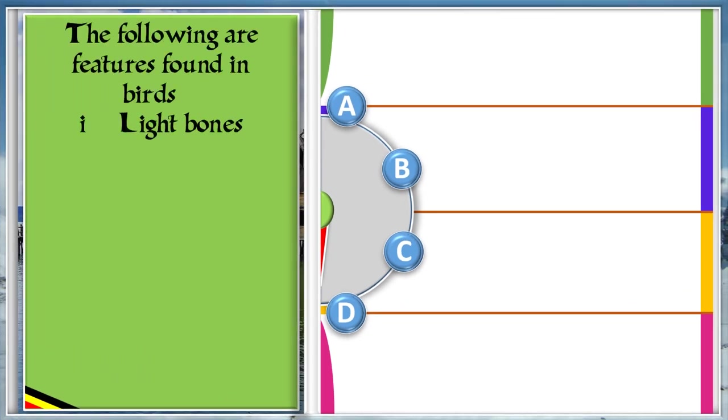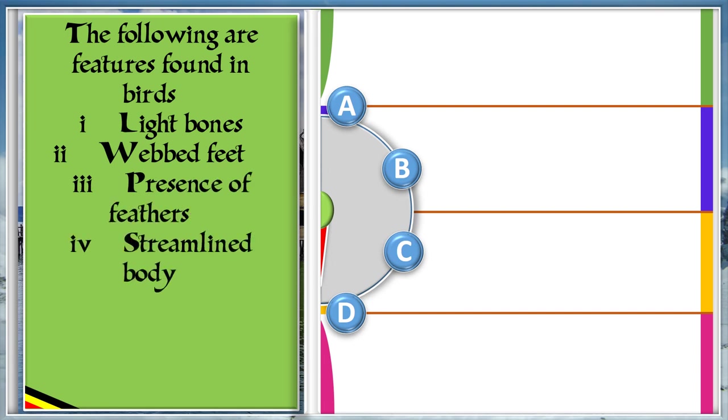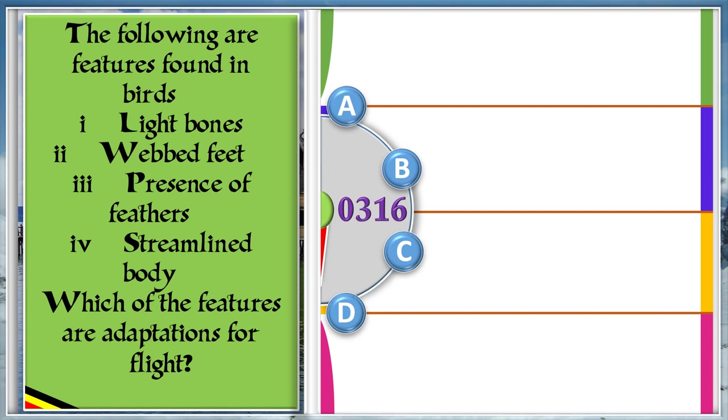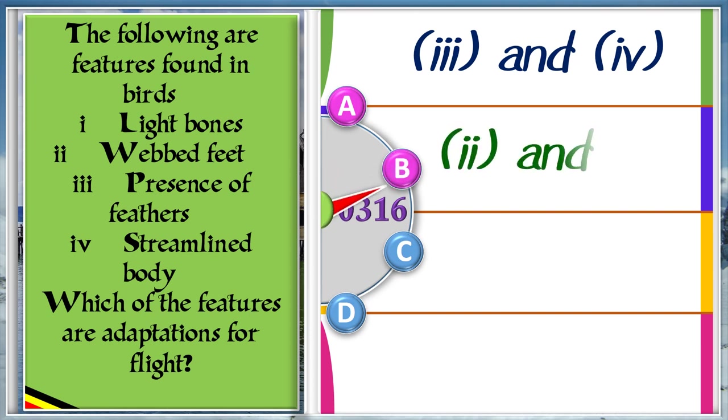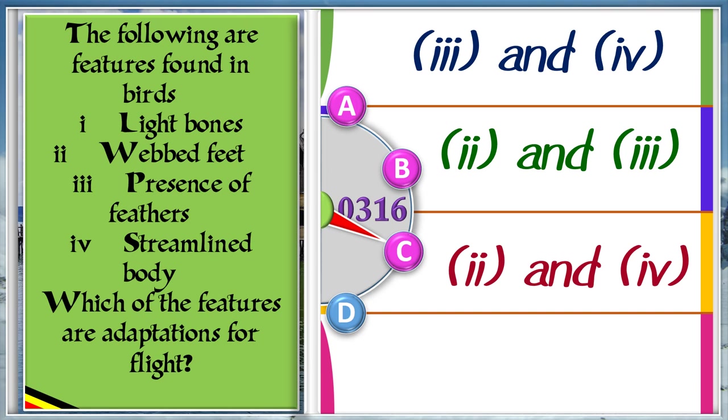The following are features found in birds: 1. Light bones. 2. Webbed feet. 3. Presence of feathers. 4. Streamlined body. Which of the features are adaptations for flight? A: 3 and 4. B: 2 and 3. C: 2 and 4. D: 1 and 2. And the answer is A, 3, presence of feathers, and 4, streamlined body.